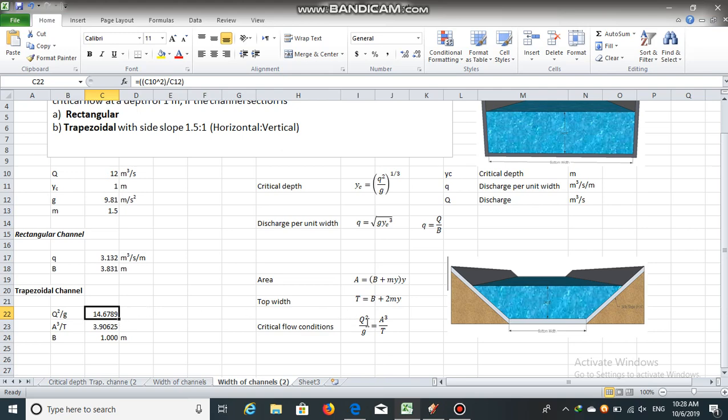This is equal to a cube divided by t for critical flow conditions, so a cube by t should be equal to 14.6789. A is b plus m times y, and top width is b plus 2 times m times y. Let us use solver.